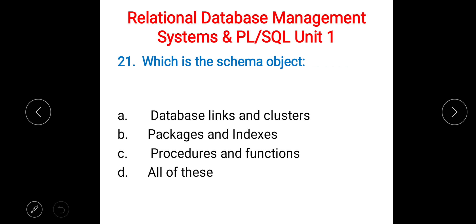Next: which are the schema objects? A) database links and clusters, B) packages and indexes, C) procedures and functions, D) all of these. The right answer is D) all of these.